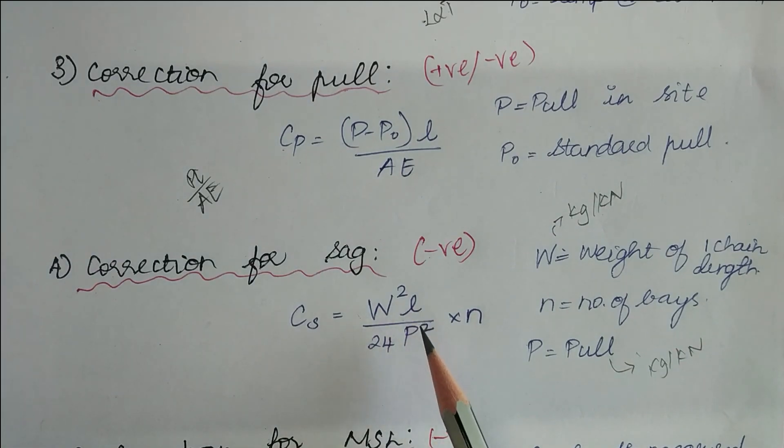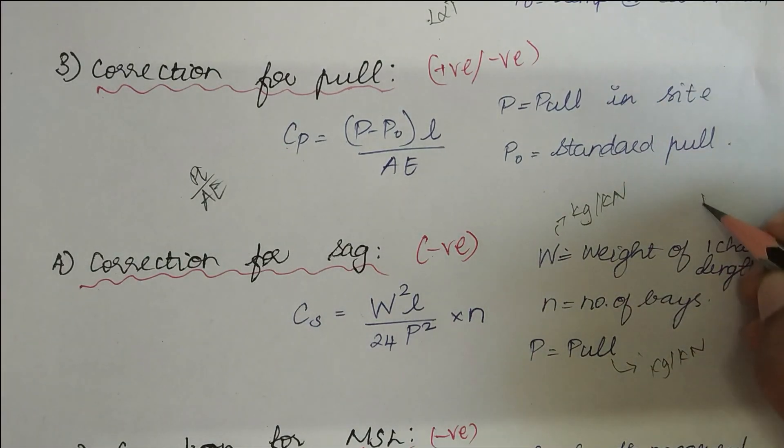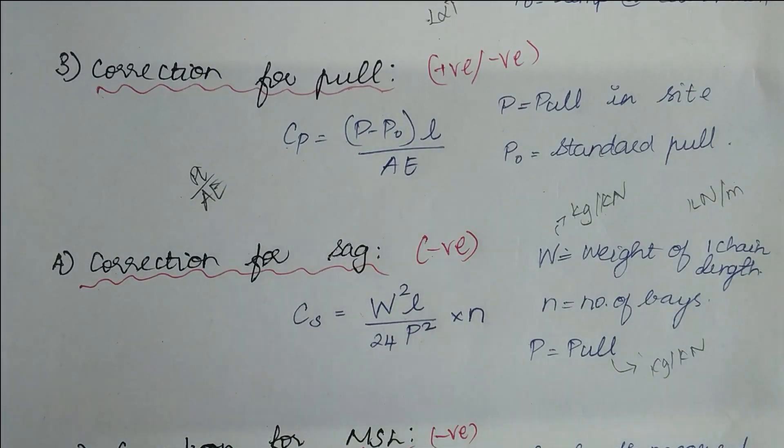And N is the number of bays or number of equal lengths, and L is the length of the distance measured. So in case you are not given the weight of the chain in kg or kilonewton, instead you have been given the weight in Newton per meter or kilonewton per meter, in that case you have to bring the weight to this unit.